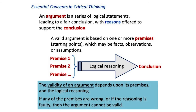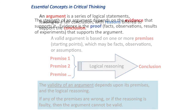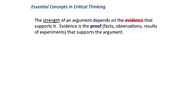In general terms, the validity of an argument depends upon its premises and the logical reasoning that builds upon these starting points. If any of the premises can be shown to be incorrect, or if the logical reasoning is faulty, then the argument cannot be valid and should be rejected. The strength of an argument depends on the evidence that supports it. Evidence is the proof — facts, observations or experimental results — that supports the premises and the logical reasoning that make up the argument.